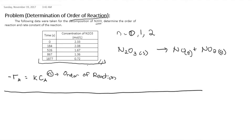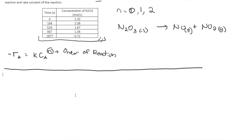To start the solution, we'll first start with the zeroth order. For the zeroth order we write negative rA equal to k times CA raised to 0. Since CA⁰ equals 1, this simplifies to negative rA equal to k.